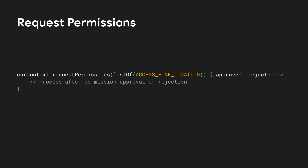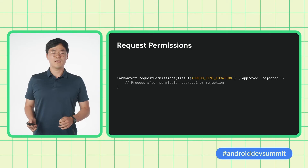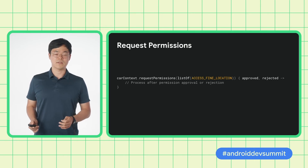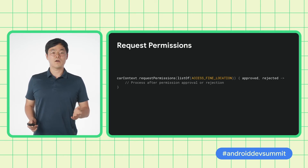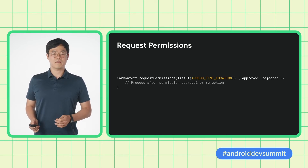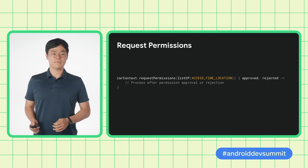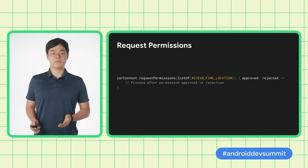To request permissions, such as the location permission, you can use carContext.requestPermissions method. In Android Auto, calling this method will show the permission request pop-up in the phone screen. In Automotive OS, the pop-up will be shown in the car screen. In the callback, you will have the list of approved and rejected permissions that you can act on.